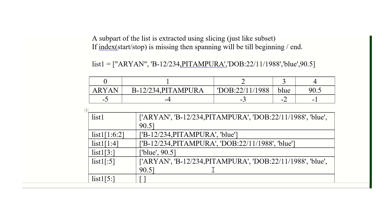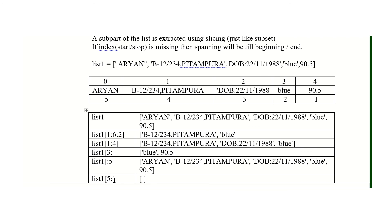If you say list1[5:], the starting position is 5, but position 5 does not exist in the list, so you get an empty list. This is the summary of operators and the introduction and creation of lists in Python. Thank you.